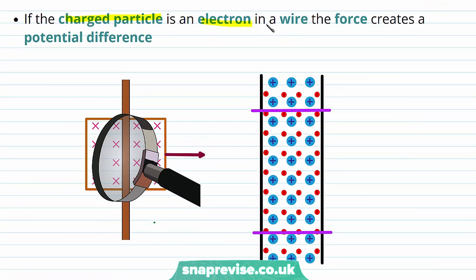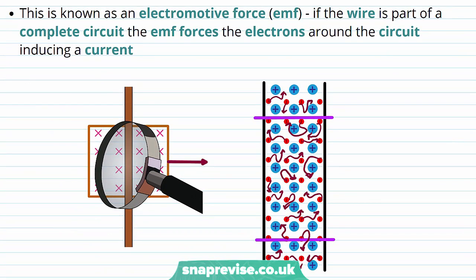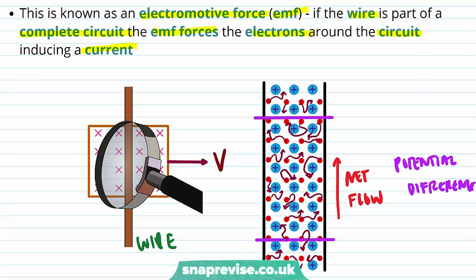If the charged particle we're considering is an electron in a wire, the force creates a potential difference. If we have a wire that is in a moving magnetic field, there's going to be a force on the electrons in the wire, and this is going to set up a potential difference. This is what's known as the electromotive force or EMF. If the wire is part of a complete circuit, the EMF forces the electrons around the circuit, inducing a current. There's going to be a net flow of electrons due to this moving magnetic field, which is going to create a potential difference and therefore a current will flow. Remember that conventional current is in the opposite direction to the motion of electrons.